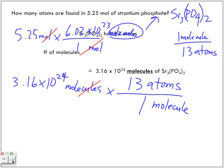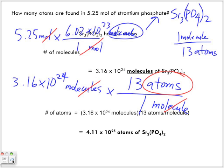So, we're going to multiply these two together. And there's no point to the dividing by one, because anything divided by one stays the same. So, molecules cancel out. My units will be in atoms. So, my answer comes out to 4.11 times 10 to the power of 25 atoms of strontium phosphate.